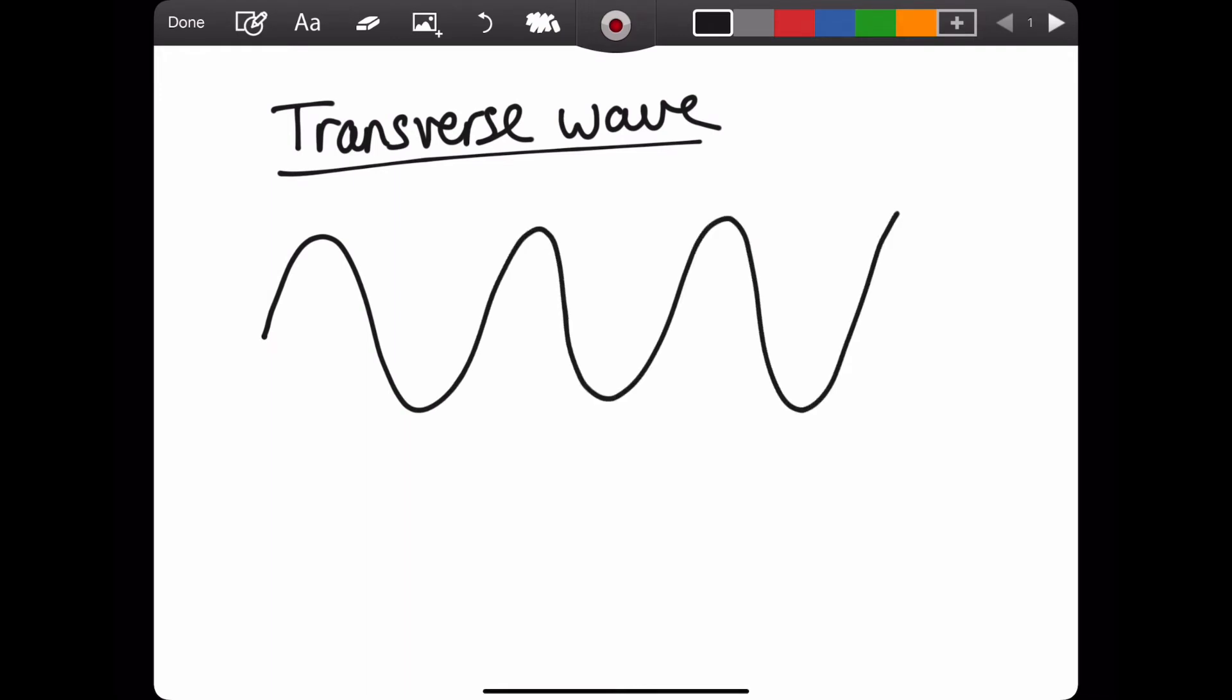You can draw transverse waves like so and a property of transverse waves is that they oscillate at 90 degrees to the direction of energy transfer or propagation of the wave.